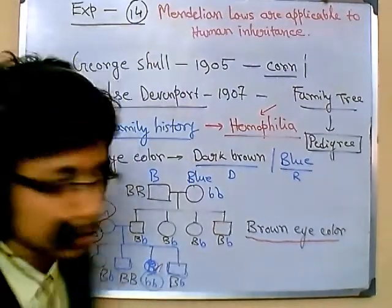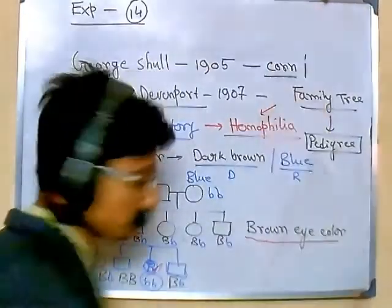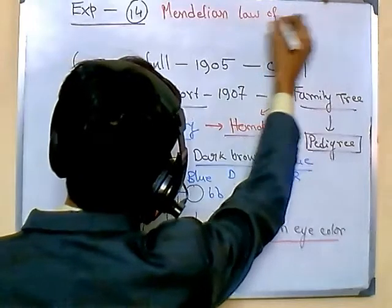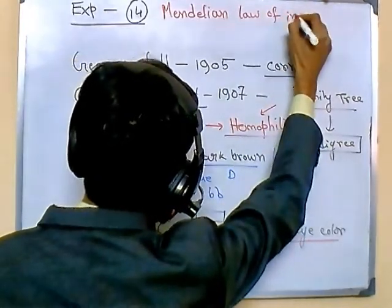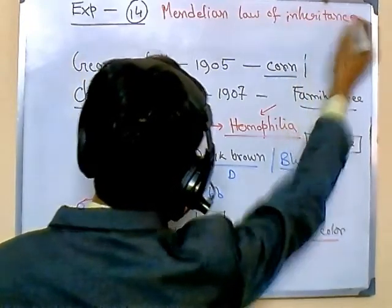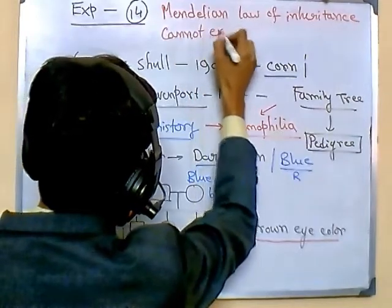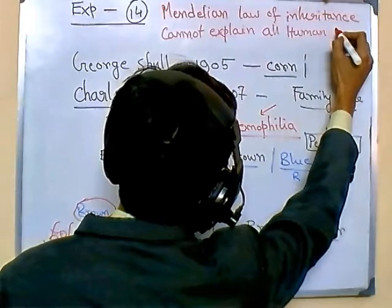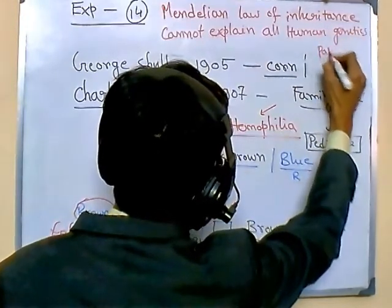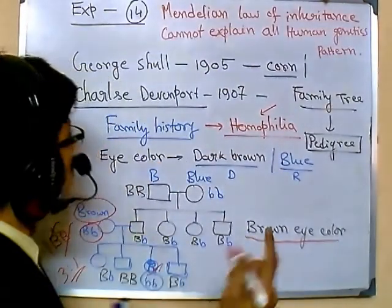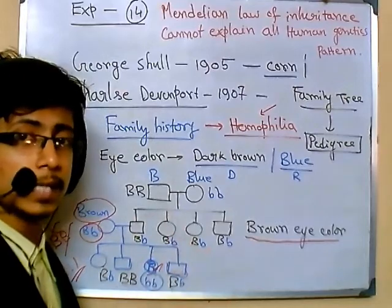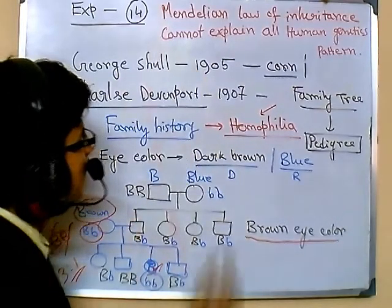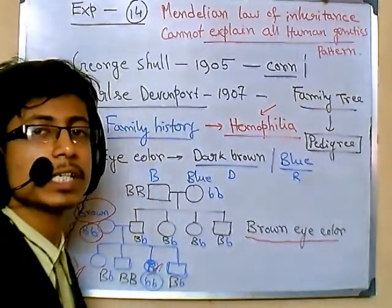So that is the 14th conclusion: Mendelian law of inheritance cannot explain all human genetics patterns. Previously, the conclusion taken by Charles Davenport was that Mendelian laws are applicable to human genetics. But after further experimentation, they found that it is not always applicable — it cannot explain all human genetic inheritance patterns.